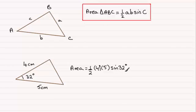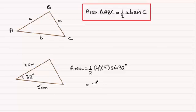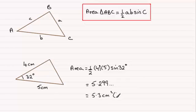Now if you're doing further maths, you might find that the angle is not in degrees — it might be given in radians. Whatever angular mode you're working in, make sure you select it on your calculator. Here we're working in degrees, so check that you're in degrees mode. If you work this out on your calculator, you should find you get 5.299 and so on, and rounding this to one decimal place, it's going to be 5.3 cm² to 1 decimal place.